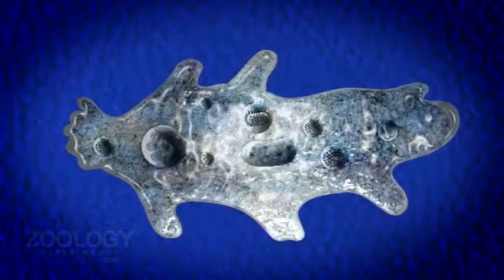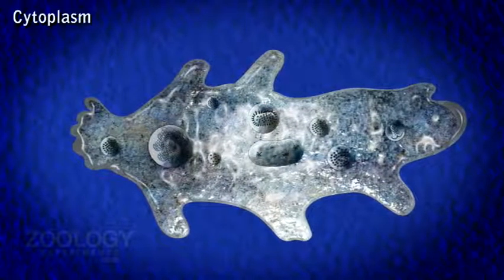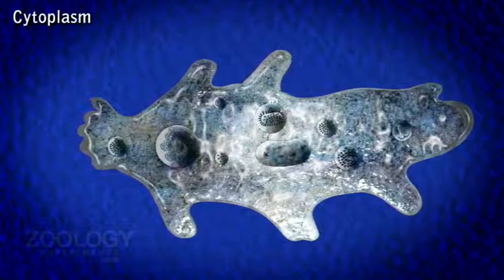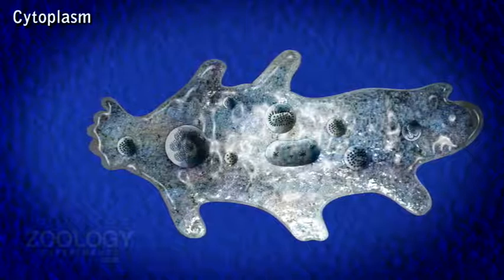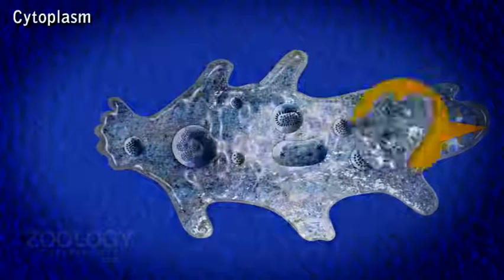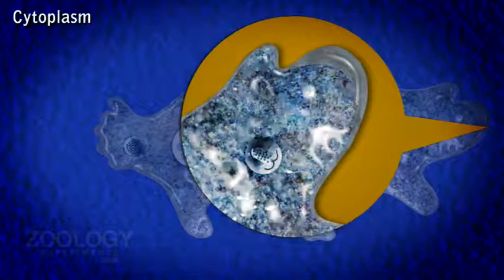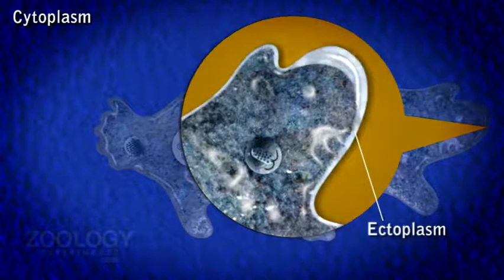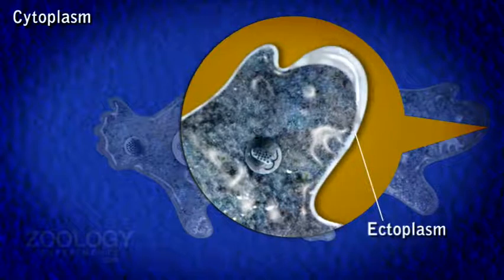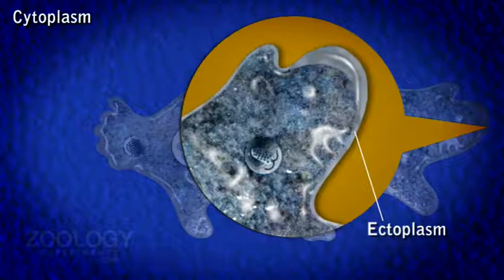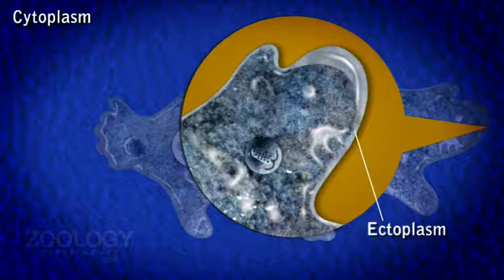Cytoplasm. Within the plasma lemma, the dense cytoplasm contains several organelles. It is differentiated into two distinct zones: an outer ectoplasm and an inner endoplasm. Ectoplasm lies immediately beneath the plasma lemma. Ectoplasm is thin, clear and transparent. It is rather rigid, contractile and under tension. It is most clearly visible at the tip of a pseudopodium, called the hyaline cap.